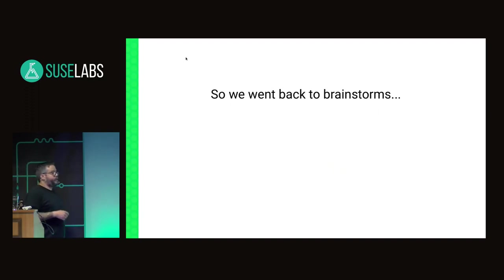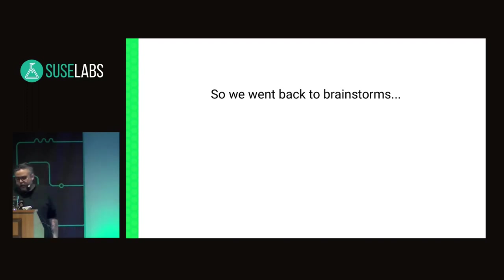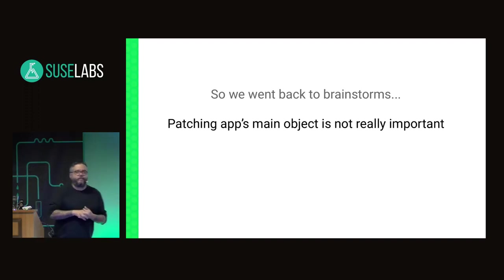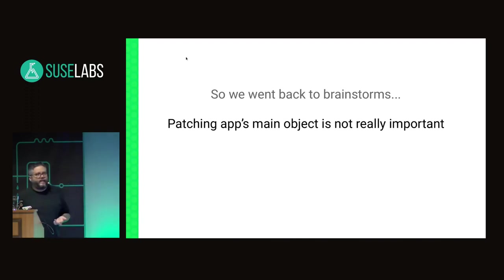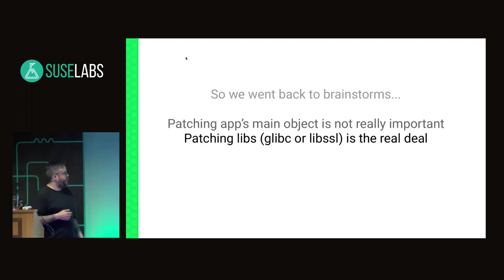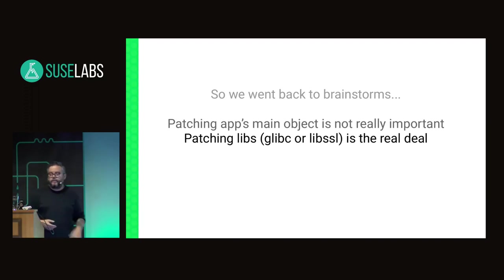So we went back to brainstorming, with discussions involving Voidzajek, IRG, LIBOR, and many contributors. We realized that patching applications was not the real target. Applications are fine to patch, but at least 90% of vulnerabilities are in libraries. So the real deal we want to reach is patchable libraries. For example, glibc and libssl are the two main targets we are focusing on right now.